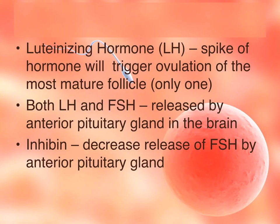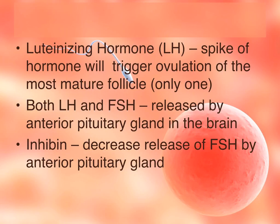Luteinizing hormone in males triggers testosterone production. In females, luteinizing hormone has a sudden peak right before ovulation — that rise and fall triggers ovulation, releasing the mature egg cell. Out of all the eggs in the ovary, only one is triggered to mature and be released each month. Both luteinizing hormone and follicle-stimulating hormone are released by the anterior pituitary. Just like in males, inhibin decreases the release of follicle-stimulating hormone by the anterior pituitary, which inhibits oogenesis.